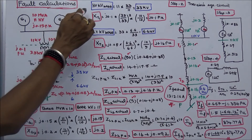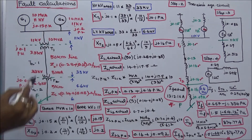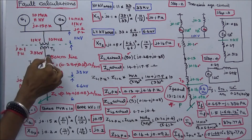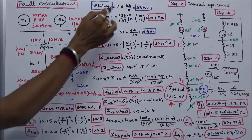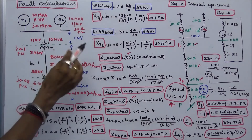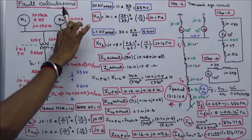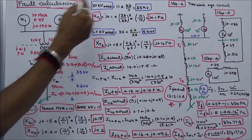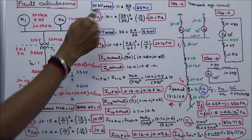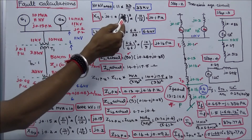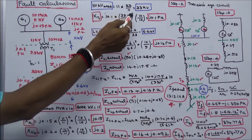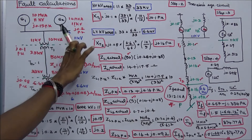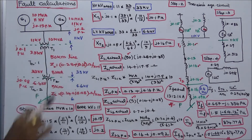Next, I calculate the high-voltage kV base. The high-voltage kV base equals the low-voltage kV base of 11 kV multiplied by the HT/LT ratio, which is 33/11, giving 33 kV. From this point onward the voltage base is 33 kV.